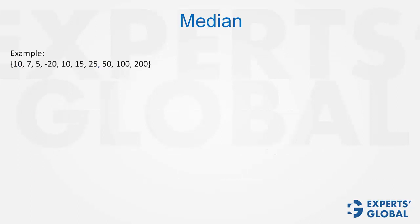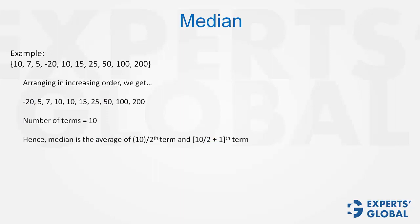Let's take an example. Look at this one. Arranging in increasing order, we get this set. Number of terms is 10 and therefore, median is the average of 5th and the 6th term. Median turns out to be the average of 10 and 15, 12.5.